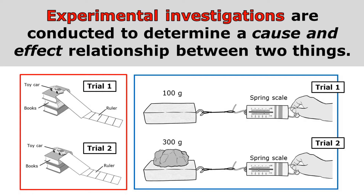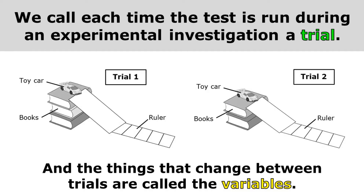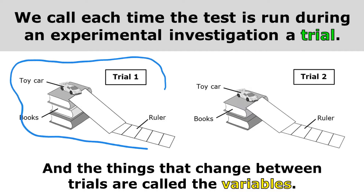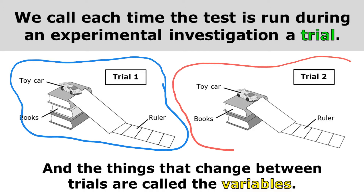Experimental investigations are conducted to determine a cause and effect relationship between two things, and it's important that we design our experimental investigations correctly so that we can draw valid conclusions about these cause and effect relationships. We call each time the test is run during an experimental investigation a trial. You can see that the first time we ran this investigation, we did it with three books — that is trial one. And then we did this investigation again with only two books — that was trial two.